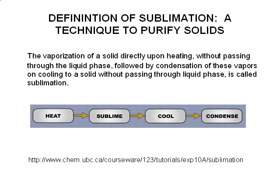Sublimation is one of the easiest and most efficient ways to effectively separate a solid substance from other solid impurities, as long as those impurities have a vapor pressure that is sufficiently different from that of your desired product — remember the relationship between vapor pressure and boiling point.